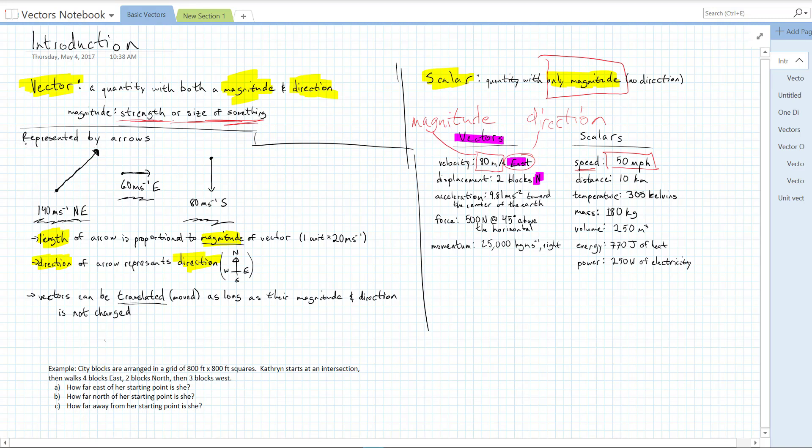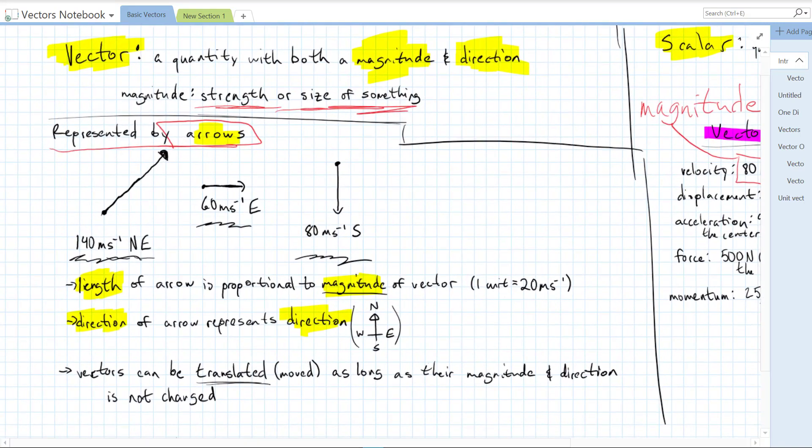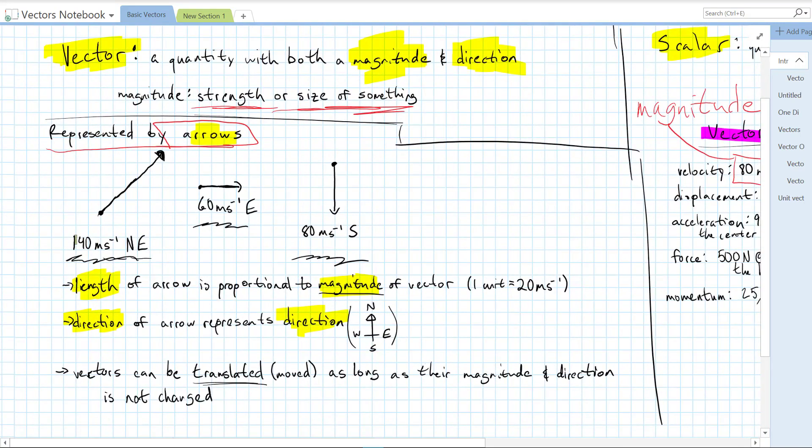And since vectors point in a particular direction, we represent them with arrows. So for example, these are a couple of arrows representing different velocity vectors. I'm going to zoom in a little bit. Here we have 140 meters per second northeast. Our arrow points to the northeast.